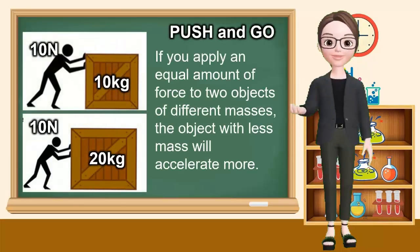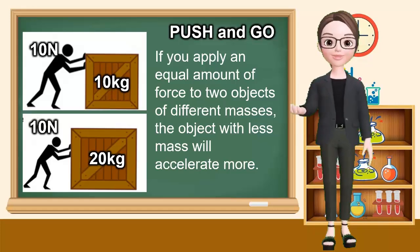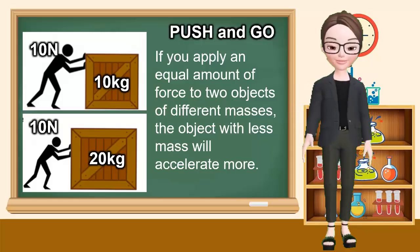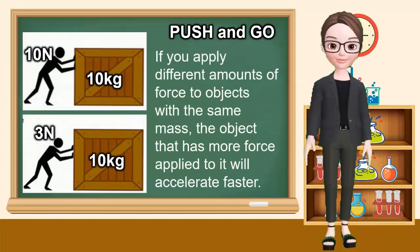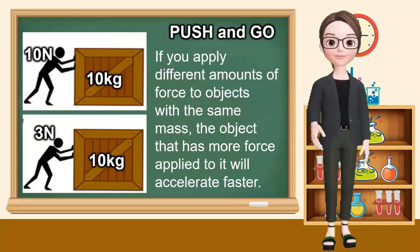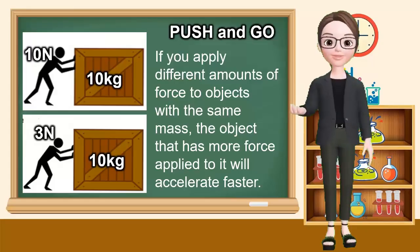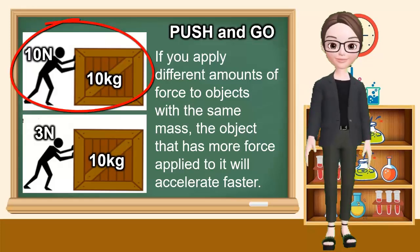In Push and Go, if you apply an equal amount of force to 2 objects of different masses — for example 10kg and 20kg with 10N force both — the object with less mass will accelerate more. If you apply different amounts of force to objects with the same mass, for example 10N and 3N for the same mass of 10kg, the object with more force applied will accelerate faster.